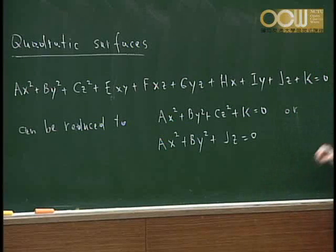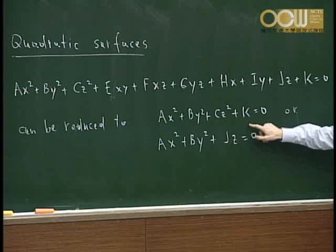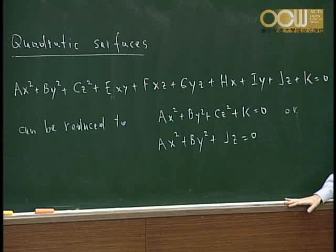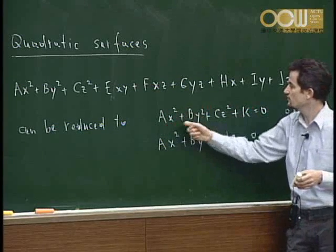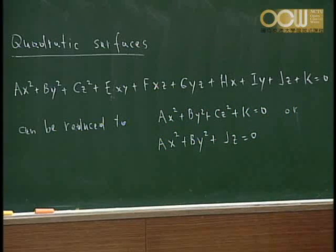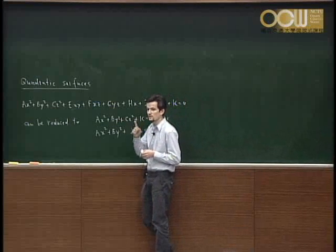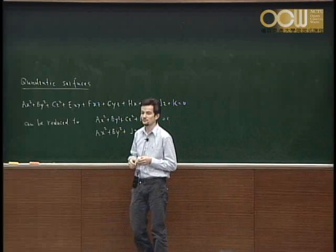For the first equation, there is only one possibility — one possible choice — where a parameter being equal to zero does not give a cylinder. This is the case k is equal to zero. So if k is equal to zero, that is the only way one of those three coefficients can be zero without giving a cylinder. So this is one type of quadratic surface.